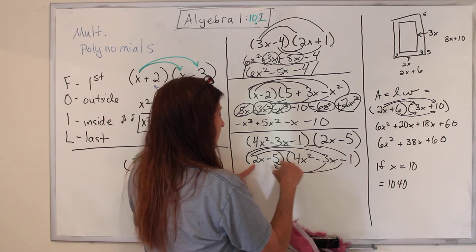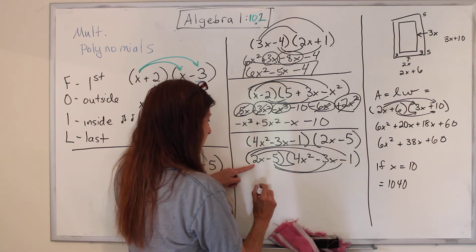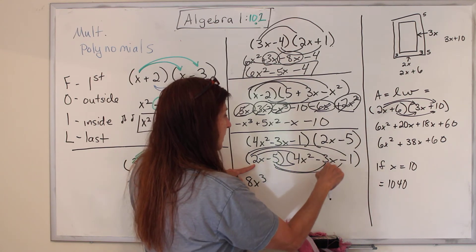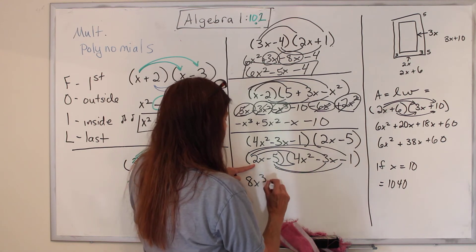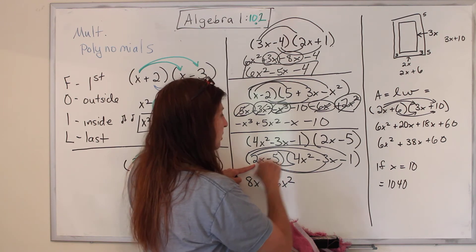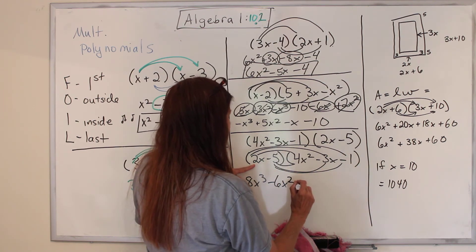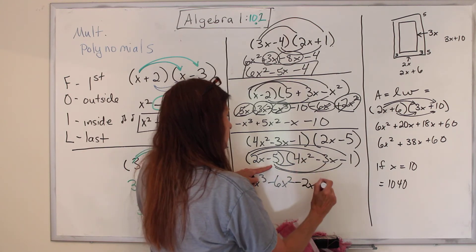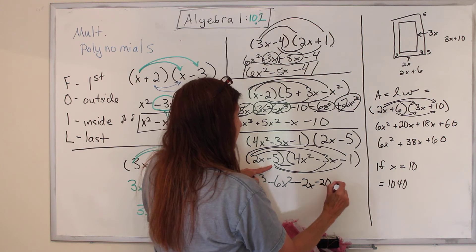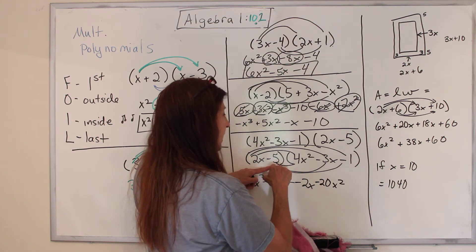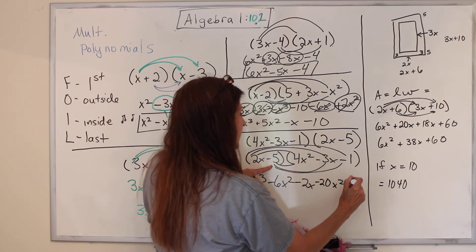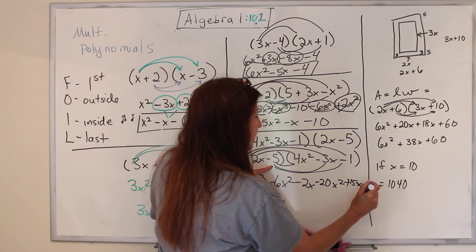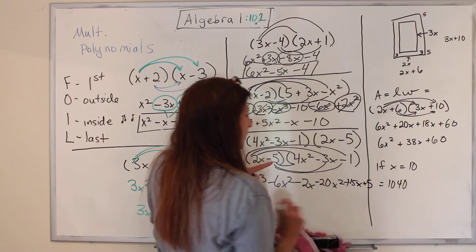2x times 4x squared is 8x cubed. 2x times negative 3x is negative 6x squared. 2x times negative 1 is negative 2x. Now I can do the bottom. Negative 5 times 4x squared is negative 20x squared. Negative 5 times negative 3x is positive 15x. And negative 5 times negative 1 is positive 5. Almost ran out of room there.